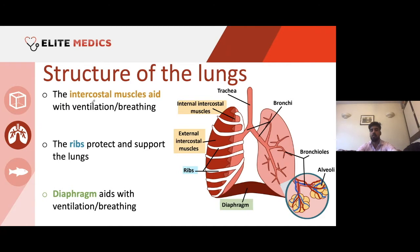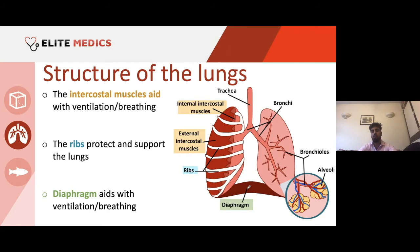What do the intercostal muscles do? They aid with ventilation and breathing — they contract and relax, causing the lungs to expand or deflate based on pressure differences. The ribs protect and support the lungs. The diaphragm, which sits under the lungs, also aids ventilation and breathing — it can contract and relax to increase and decrease the volume of the chest cavity, the thorax, leading to pressure changes which allow the lungs to inflate or deflate.